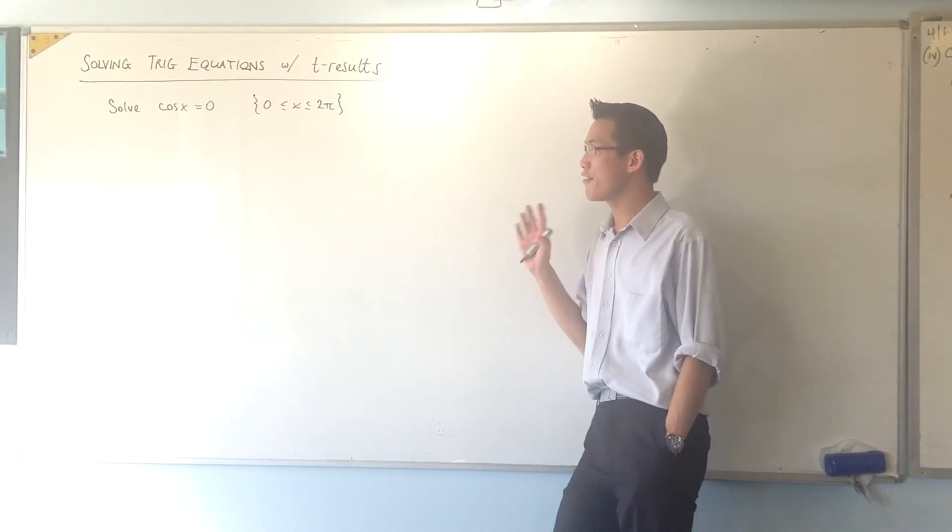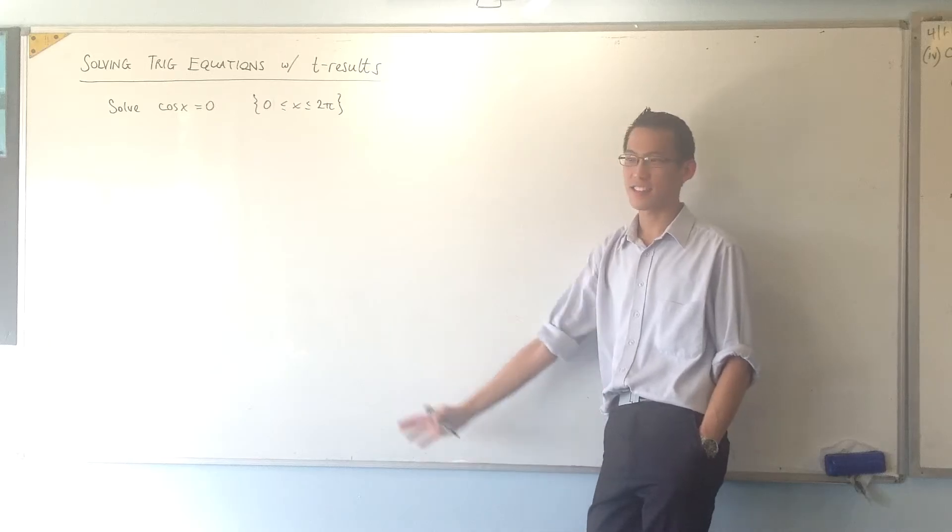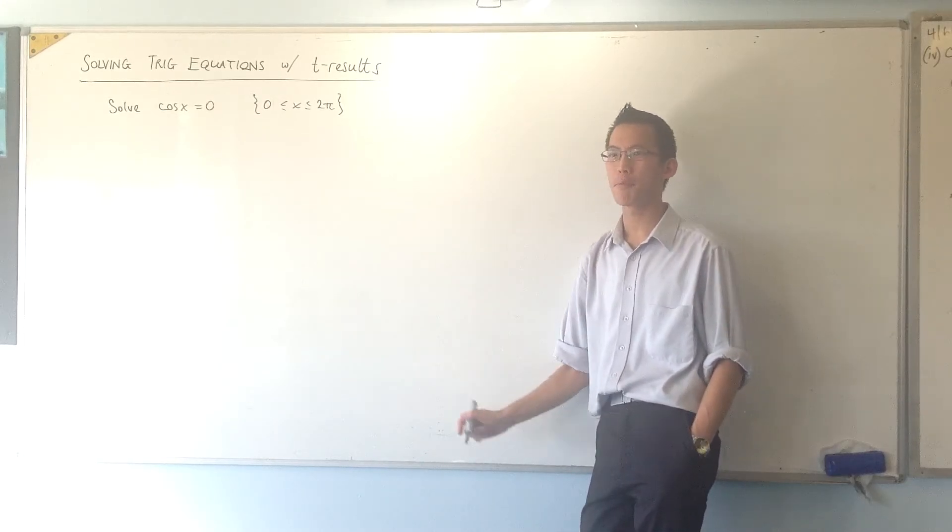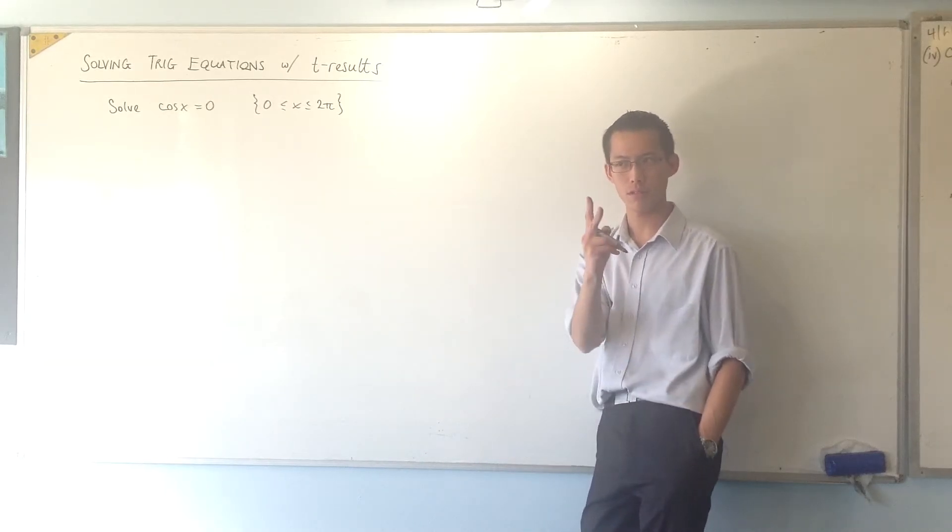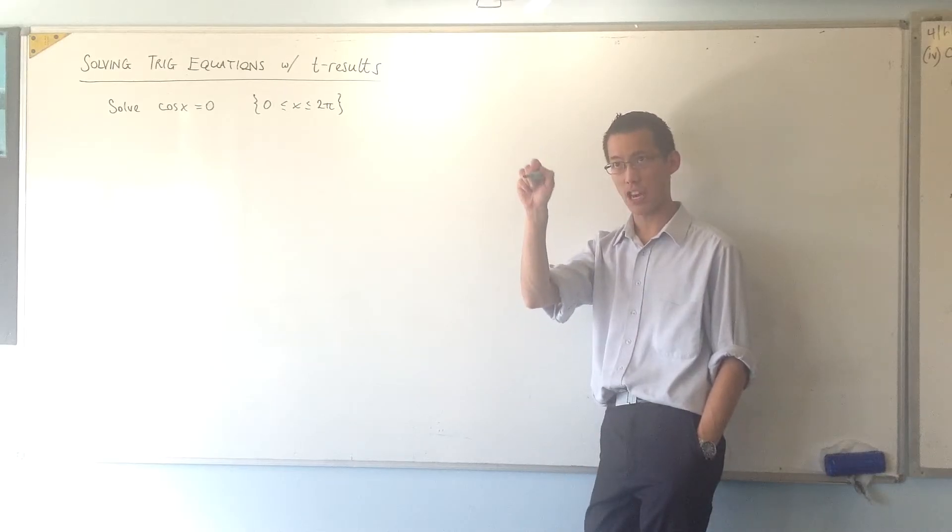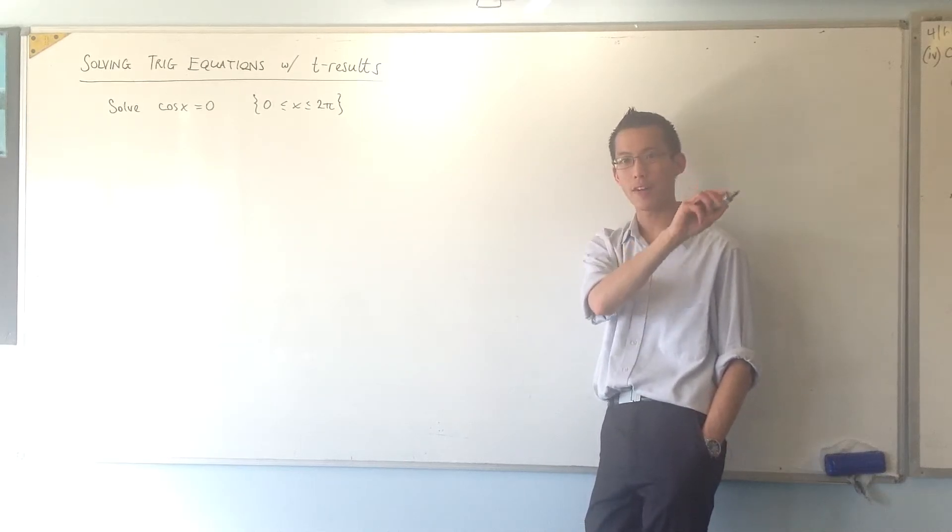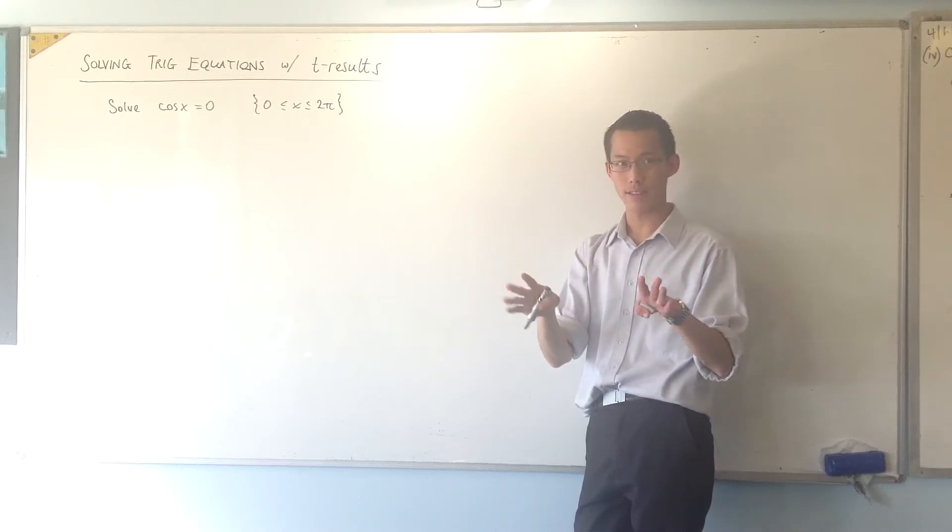Solve cos x equals 0. Now, I reckon, hopefully, fingers crossed, because it's such a simple question, you might even be able to just write down the answer. There are two solutions, and maybe you know the shape of the cosine curve well enough to be like, oh, solution there, solution there.